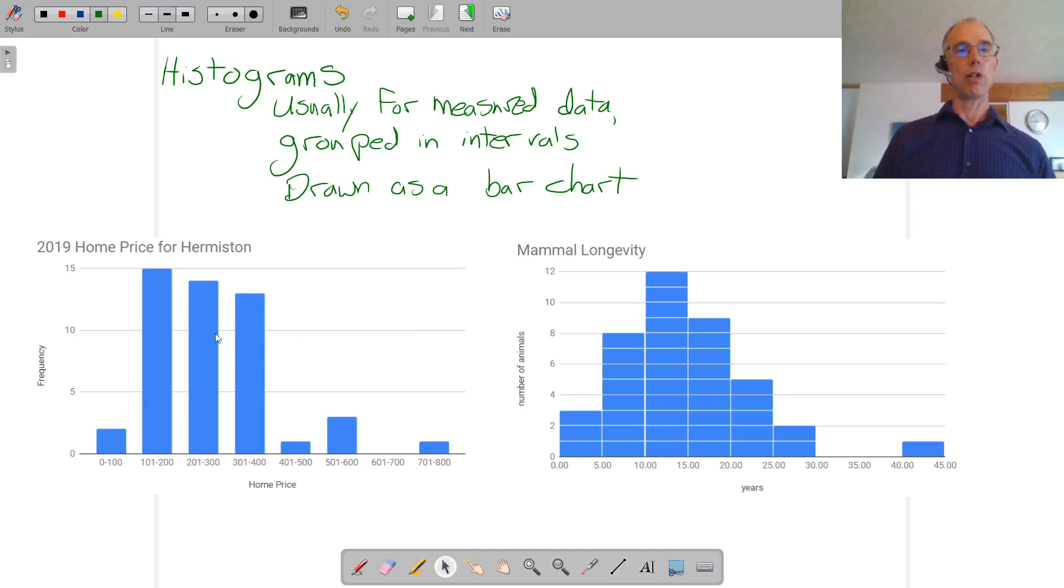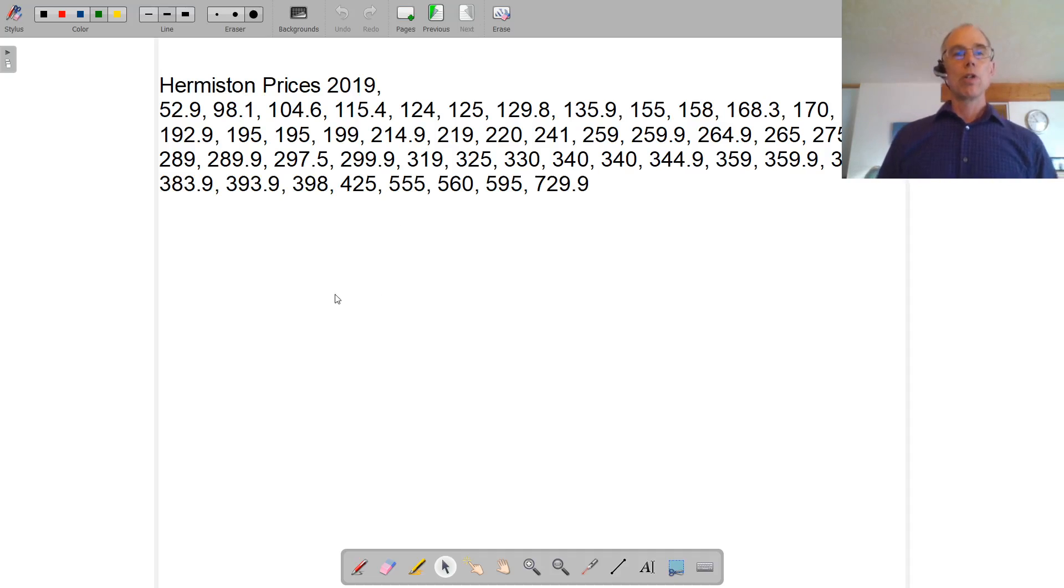So we're going to try that for this Hermiston price data. We'll do it by hand and then later we'll try with a computer. So in order to do it I need some data and I need to know what the range of the data is and I have to decide how many groups I want.